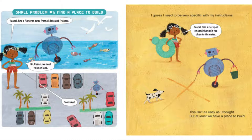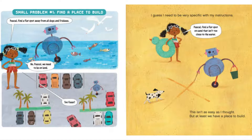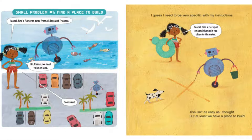Small problem number one: find a place to build. Pascal, find a flat spot away from all the dogs and frisbees. No, Pascal — we need to be on land. Too far! I guess I need to be very specific with my instructions. Pascal, find a flat spot on the sand that isn't too close to the water. This isn't as easy as I thought, but at least we found a place to build.